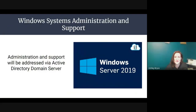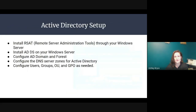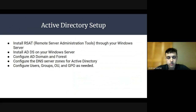Windows system administration and support will be addressed via Active Directory domain server within Windows Server 2019, which Andrew will now explain how to set up. For Active Directory setup, you will install RSAT — Remote Server Administration Tool — through your Windows Server, install ADDS, which is Active Directory under Windows Server. Then you'll configure the domain and the forest, configure the DNS server zones in Active Directory, configure users, groups, OUs, and the GPO as needed.